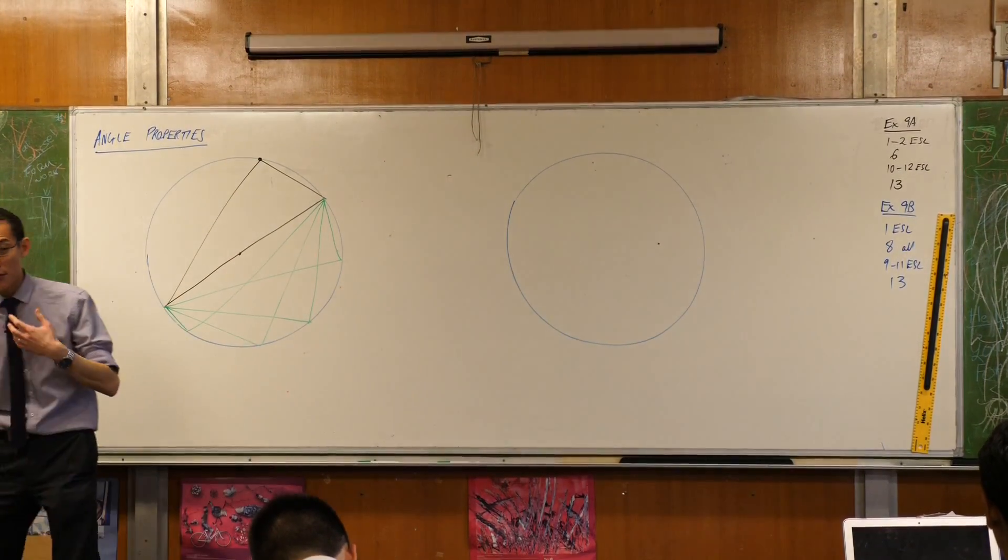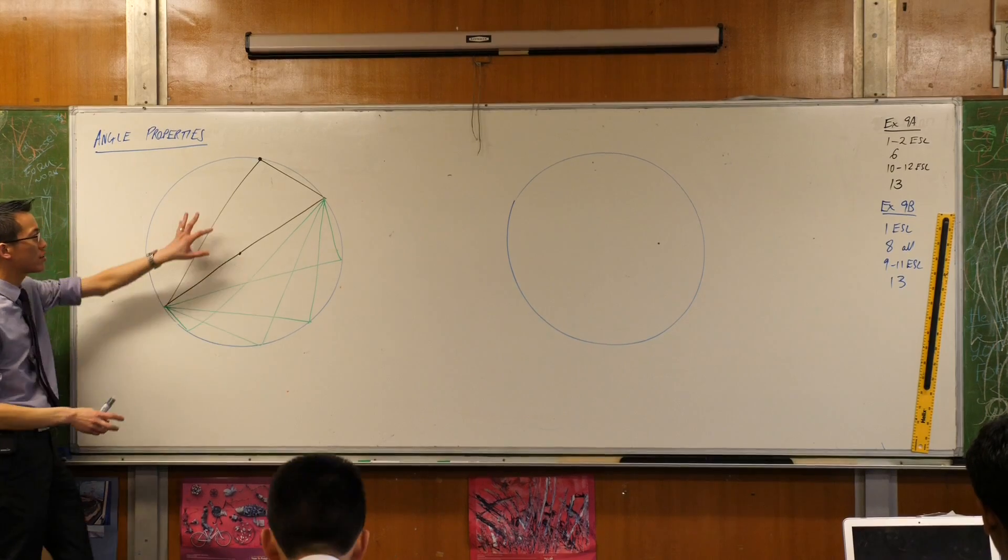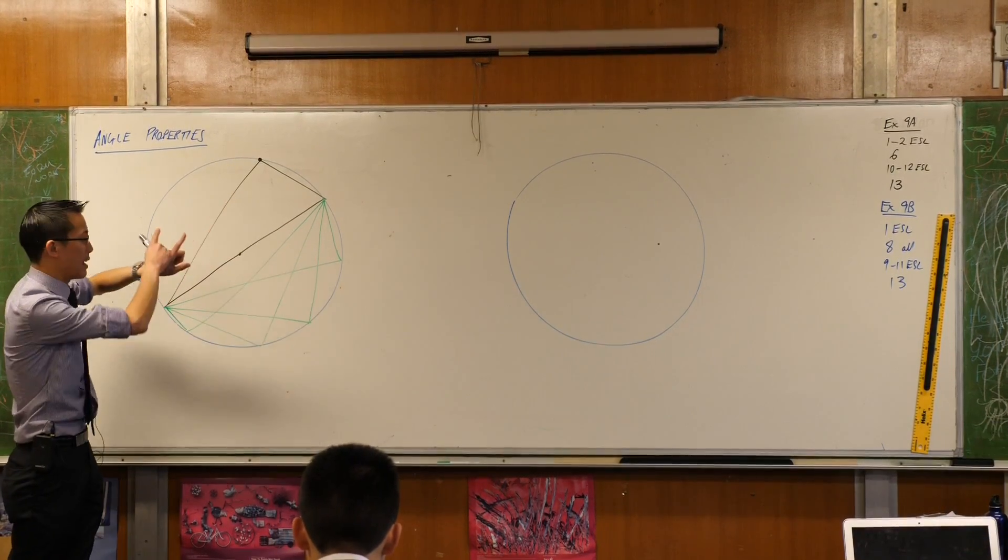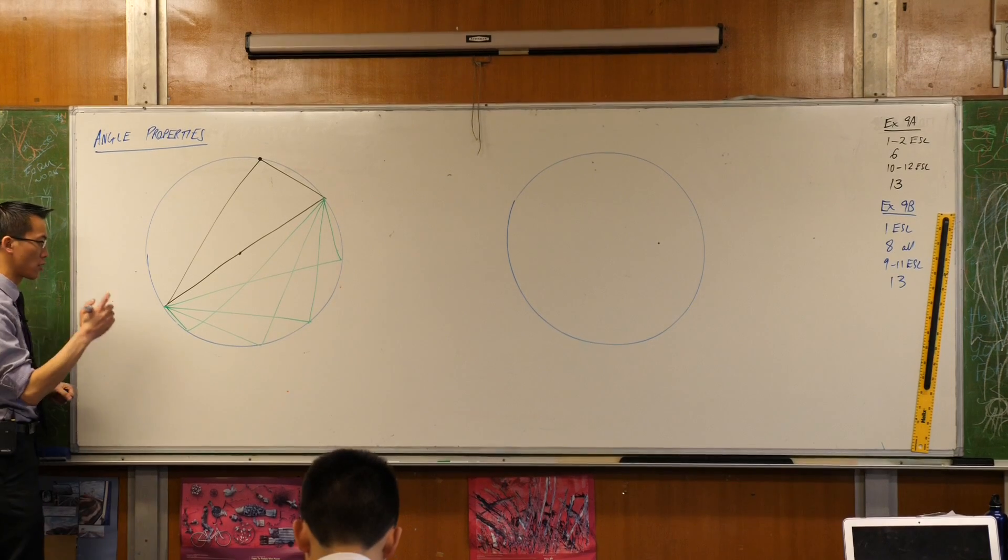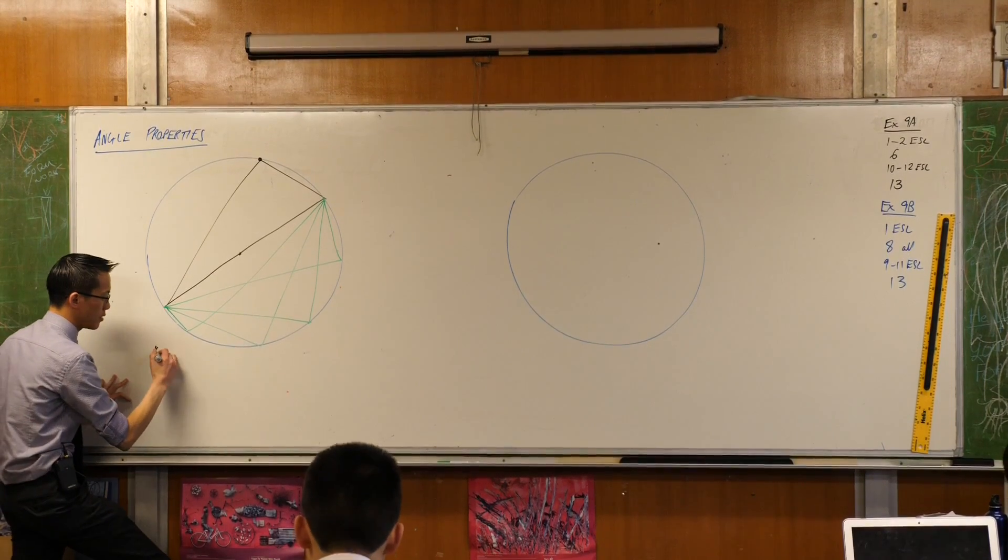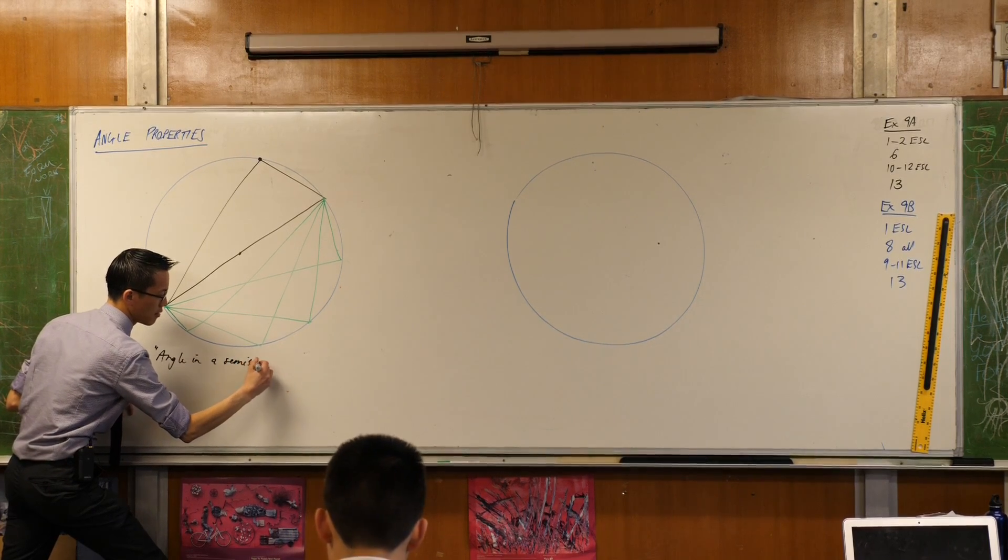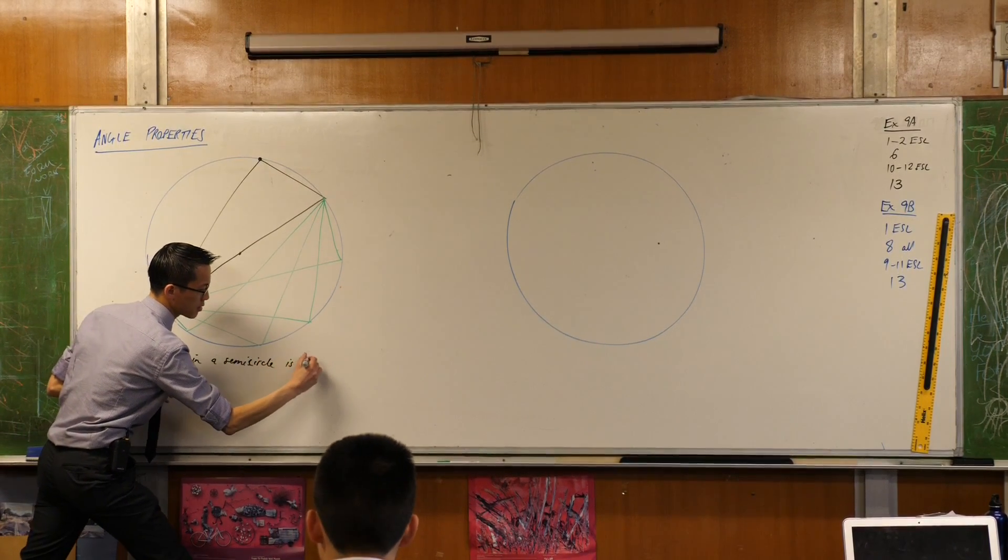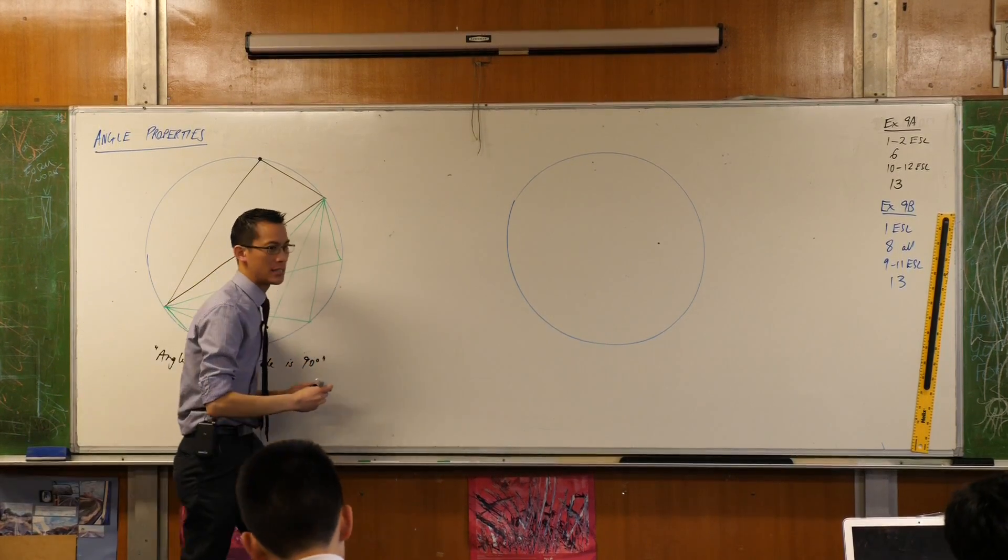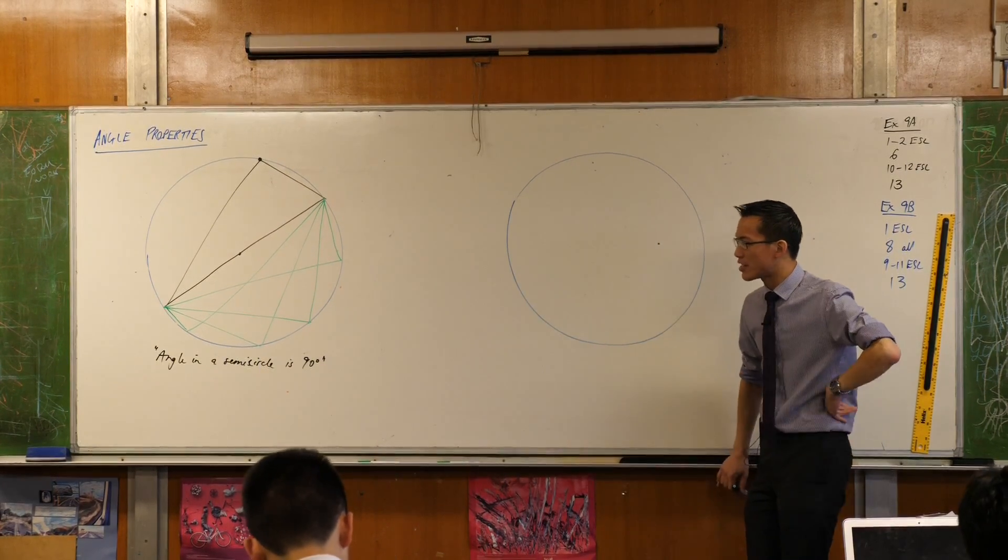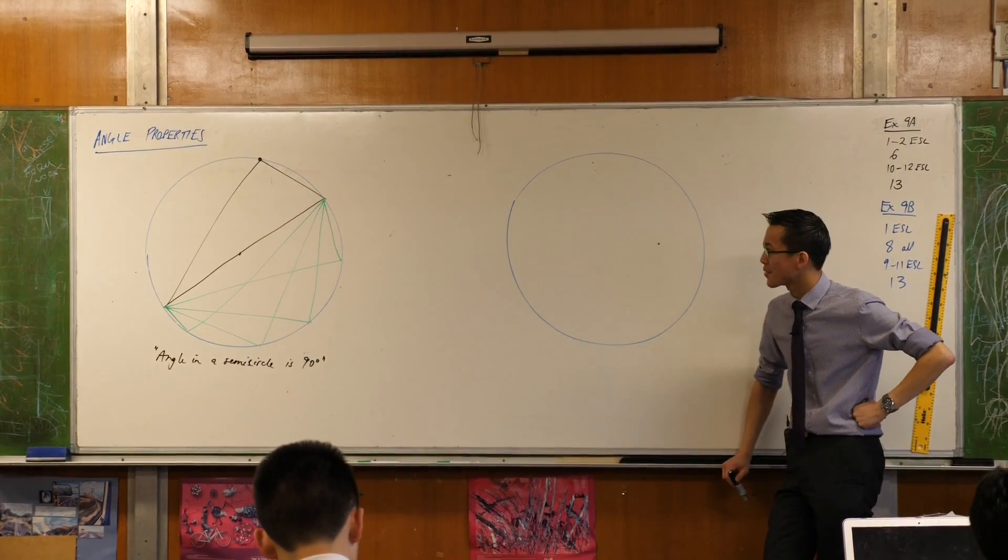So the name of this property is, because the segment that you drew off was actually not just any segment, it's a semicircle, it's exactly half the semicircle. The name of this property is, the angle in a semicircle is a right angle, or 90 degrees is even faster to write than saying a right angle. Angle in a semicircle is 90 degrees.